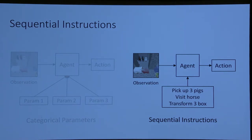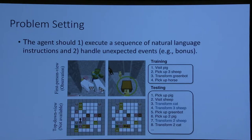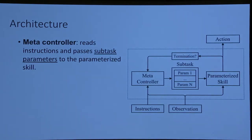Next, I'll look at sequential instructions — giving a sequence of tasks like 'pick up three pigs,' 'visit horse,' 'transform three boxes.' A magic bonus box can appear randomly, and if the agent sees it, it must interrupt what it's doing, take advantage of that opportunity, then return to its original task. These random interruptions provide a bonus reward. The entire task is reinforcement learning — the agent only gets a reward at the very end after completing all instructions.